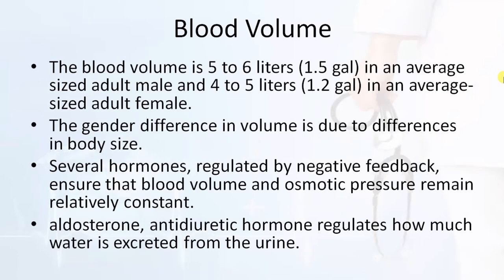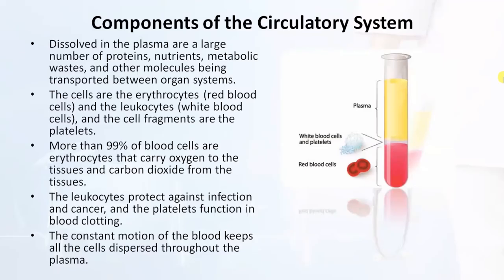Components of the circulatory system: Dissolved in the plasma are a large number of proteins, nutrients, metabolic waste, and other molecules being transported between organ systems. The cells are erythrocytes (red blood cells) and leukocytes (white blood cells), and the cell fragments are platelets. More than 99% of blood cells are erythrocytes, which carry oxygen to the tissues and carbon dioxide from tissues. Leukocytes protect against infection and cancer, and platelets function in blood clotting. The constant motion of blood keeps all cells dispersed throughout the plasma.